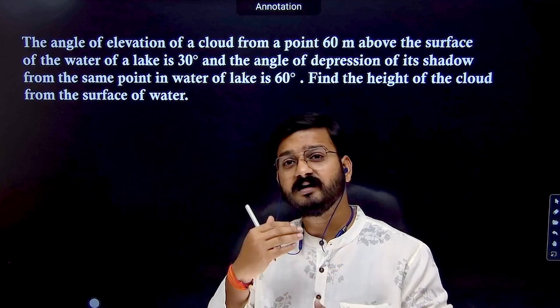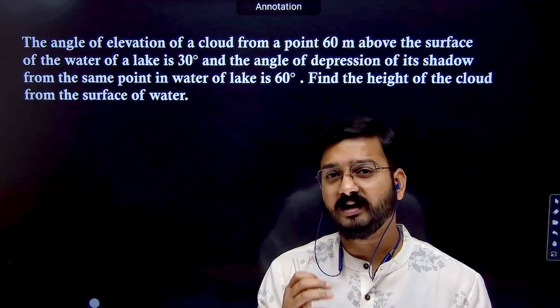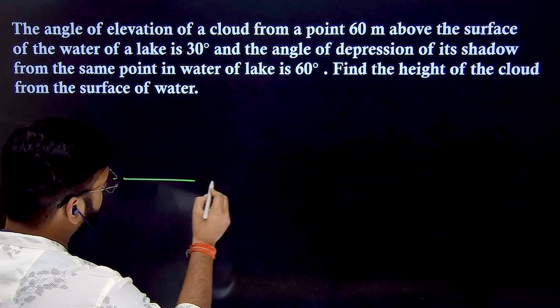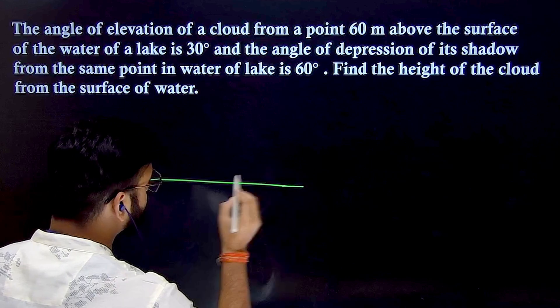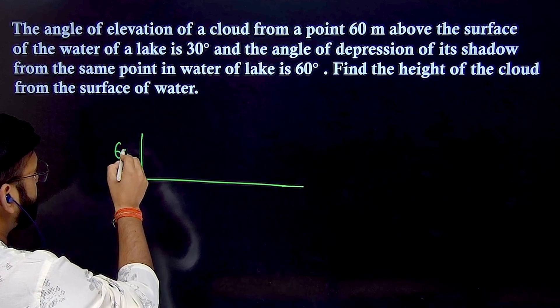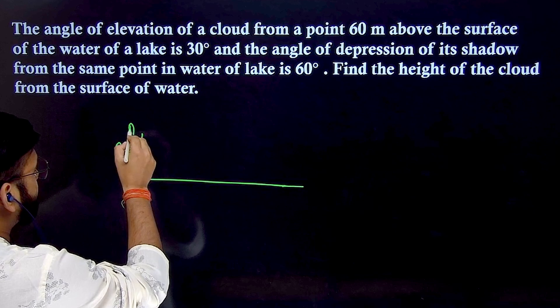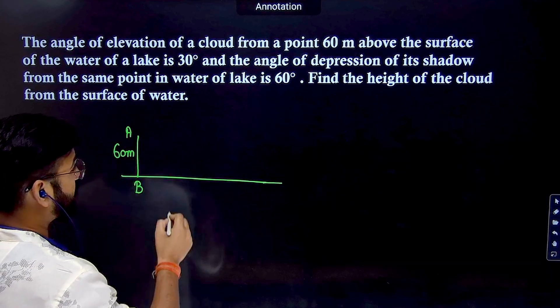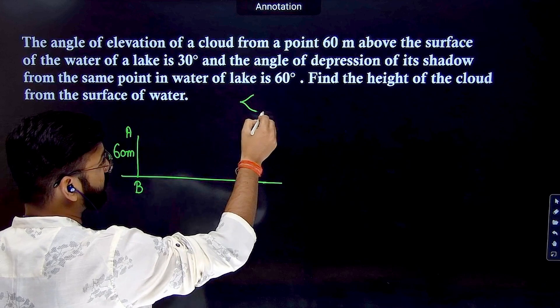Let's draw the surface of the lake first. This is the surface of the lake. Take a point 60 meters above the surface—name this as AB. From this point A, which is 60 meters above the surface, you are seeing the cloud.